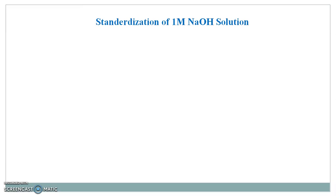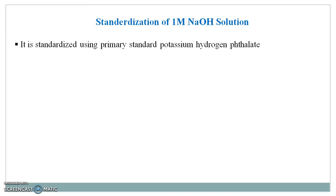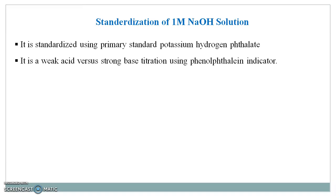The second part is standardization of the 1 molar sodium hydroxide solution which we prepared. The sodium hydroxide solution is standardized using a primary standard like potassium hydrogen phthalate or oxalic acid. Here we use potassium hydrogen phthalate. A primary standard is a substance having the highest purity, due to which it is not calibrated to other standards. This is a weak acid versus strong base titration using phenolphthalein as indicator.